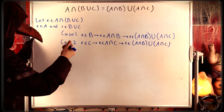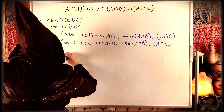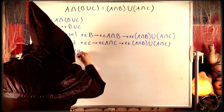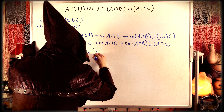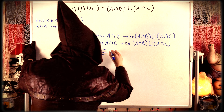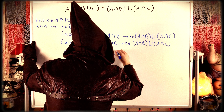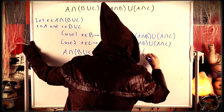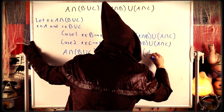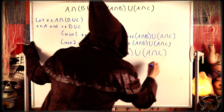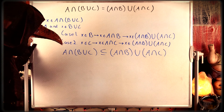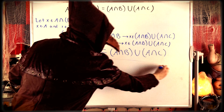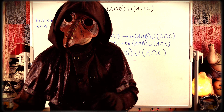Thus by definition of subset, we have our desired subset relation: A intersect B union C is a subset of A intersect B union A intersect C, because we showed that any element of this set also has to be an element of that set.